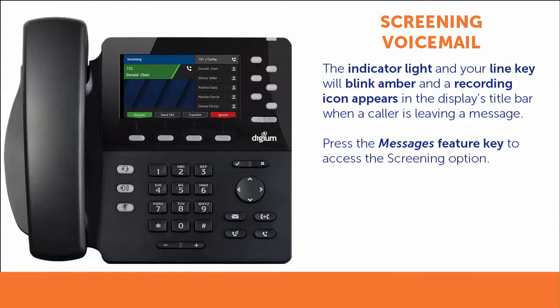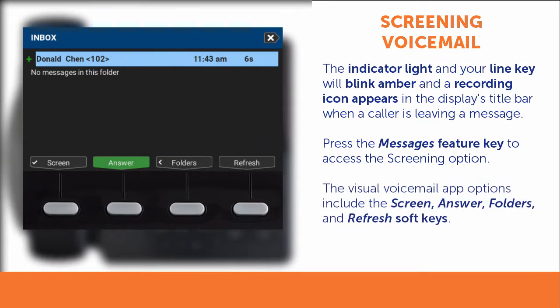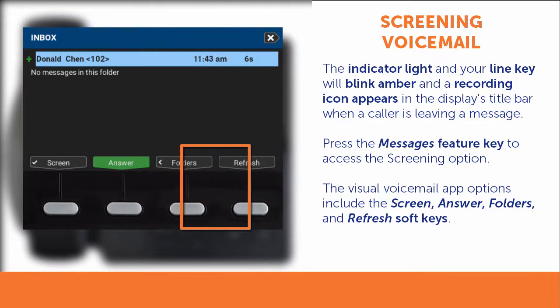To access the screening option, press the Messages Feature key. This displays the app's soft keys: Screen, Answer, Folder, and Refresh.